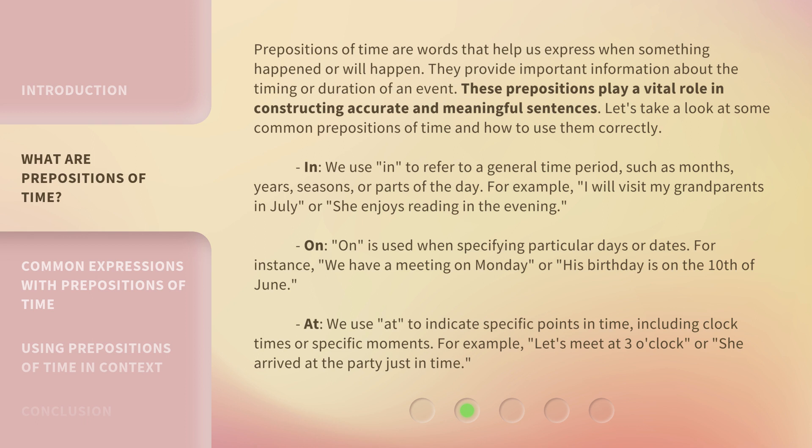Prepositions of time are words that help us express when something happened or will happen. They provide important information about the timing or duration of an event. These prepositions play a vital role in constructing accurate and meaningful sentences.